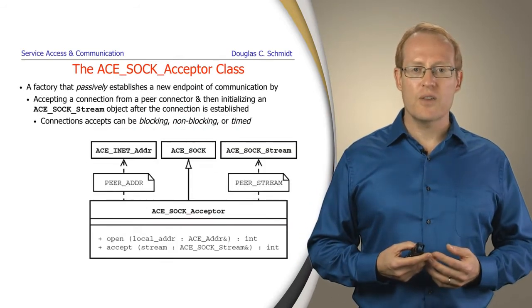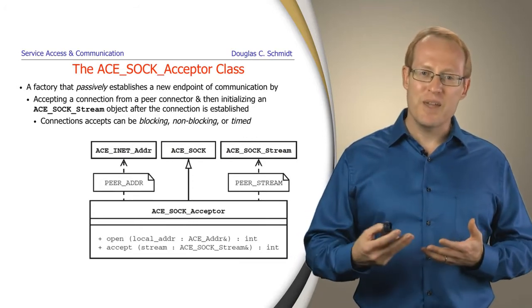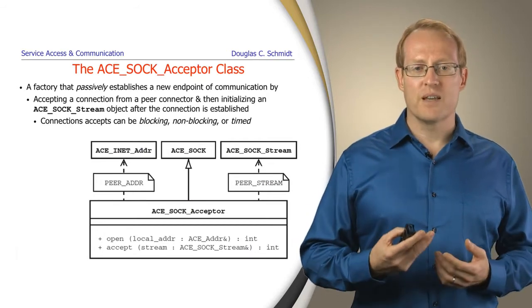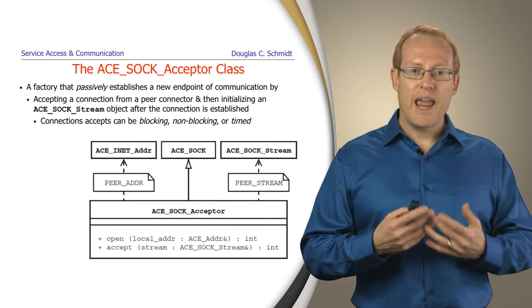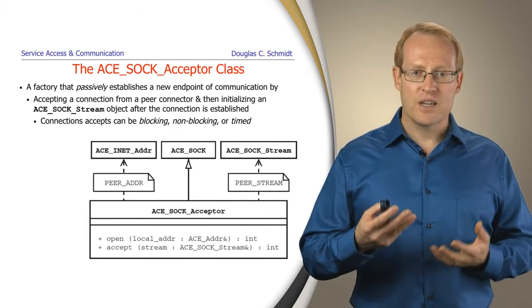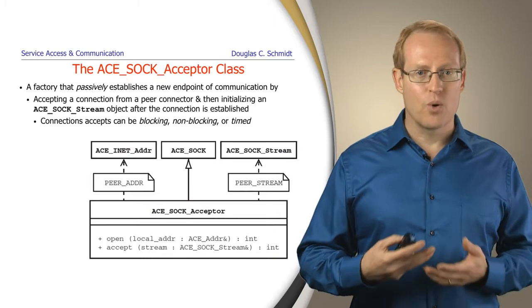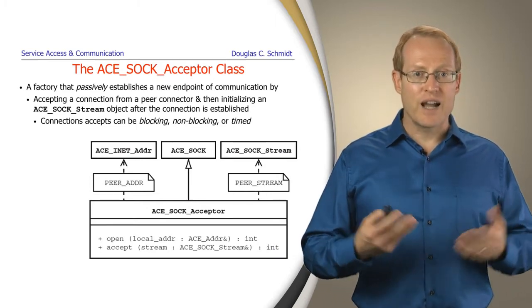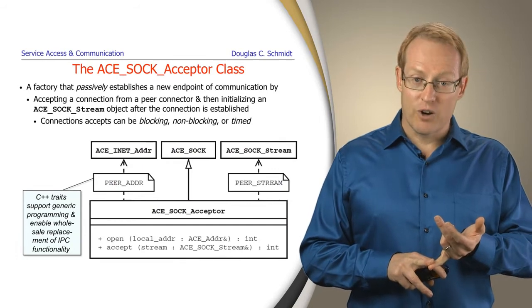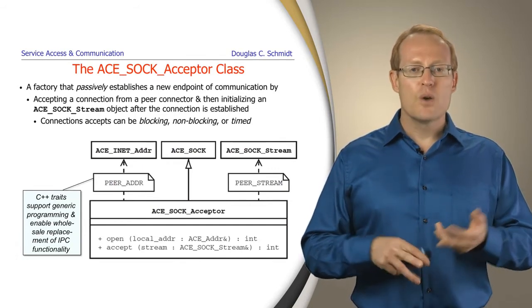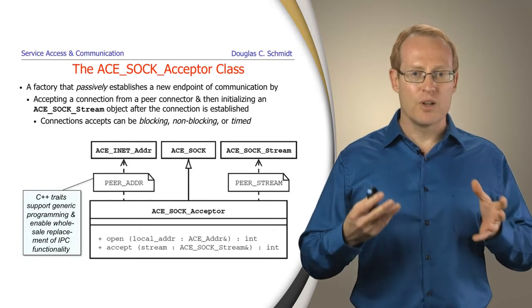The passive side is done with another class called the ACE_SOCK_Acceptor. The ACE_SOCK_Acceptor is the part that waits to listen for connections to come in from active clients. And the way this works is it waits to connect, waits for the connect to show up, and when the connect shows up, the accept function returns, and what you've got back is a connected and initialized ACE_SOCK_Stream object. And that ACE_SOCK_Stream object can then be used to send and receive data in whatever application or service-oriented protocol we're using without having to worry about how it got connected in the first place, be it active or passive. You can do these accept operations both in blocking, non-blocking, and time manner. Again, we can also use mechanisms using traits to be able to plug and play these different IPC capabilities for higher-level components.